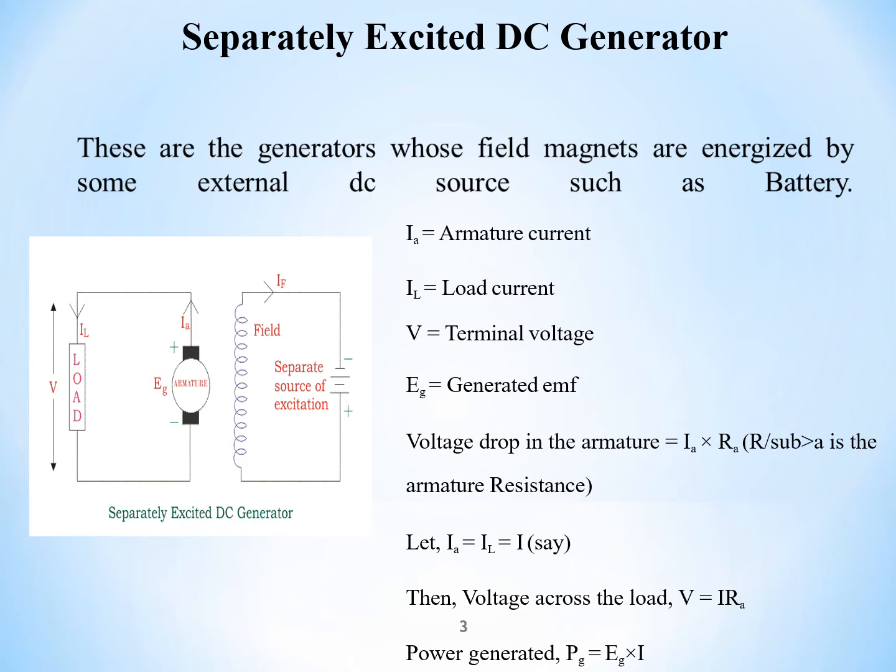In separately excited DC generator, the field is actually excited by a separate battery. So the flux is directly linked with the armature, and EMF will be produced. But whereas in self-excited DC generator,